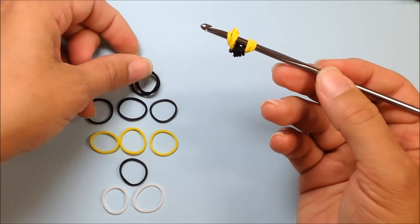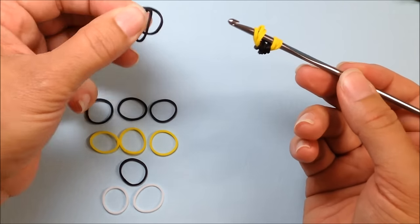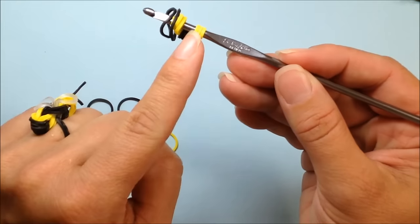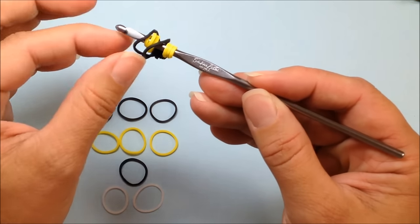Our next step is to take two black bands and just place those on our hook, trying to move them into the center of the yellow.